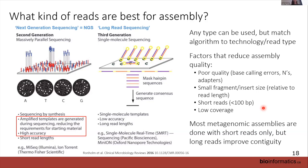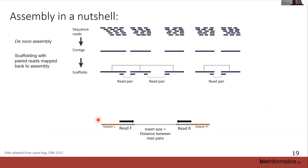Assembly in a nutshell: it's de novo, driven purely by the reads without a reference. You can think of it simply as the overlap consensus model — you figure out where reads overlap, and that overlapping fragment of DNA becomes your consensus contig. In reality, all shotgun metagenomic assemblers use de Bruijn graphs, a slightly different method, but conceptually for this course you can think of it that way.